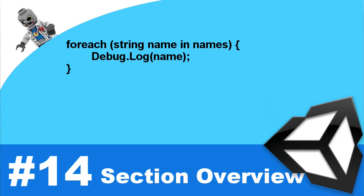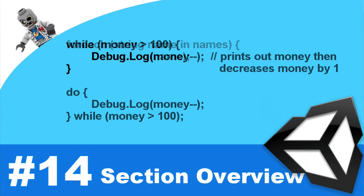Last but not least, alongside the for and for each loop, we have the do while loop. The while loop does a loop while a certain condition is true, while the do while loop performs one iteration before evaluating whether to continue. For the most part you'll be using the while loop, but the do while loop is there when you need to run that first iteration regardless.